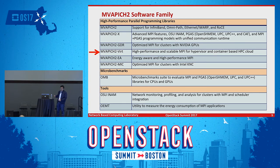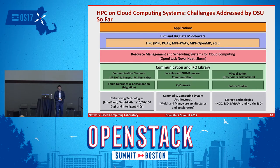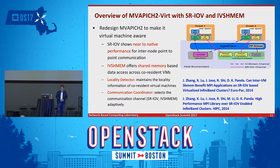Today's talk is focused on MVAPICH2-Virt: a high-performance and scalable MPI for hypervisor- and container-based HPC clouds. The architecture includes your application layer, MPI or hybrid programming models, a resource management layer for cloud computing with examples like Heat and SLURM, and underneath that, communication and I/O libraries. We present concrete designs for each of these layers.